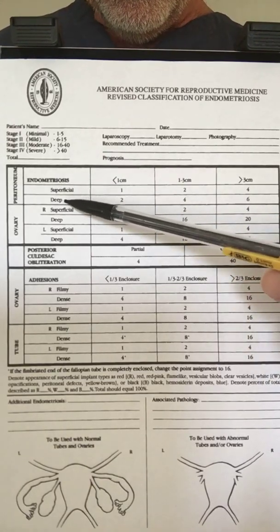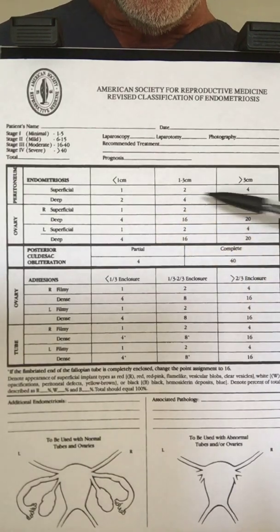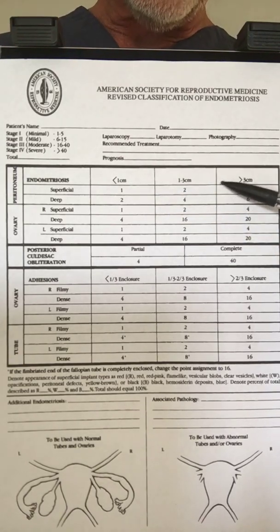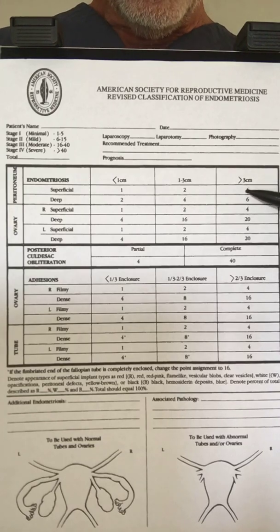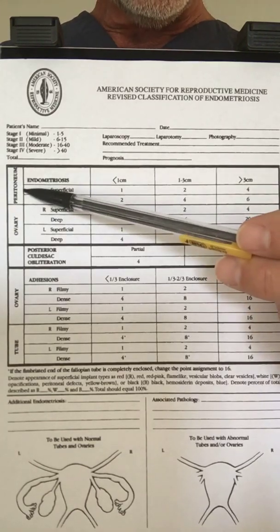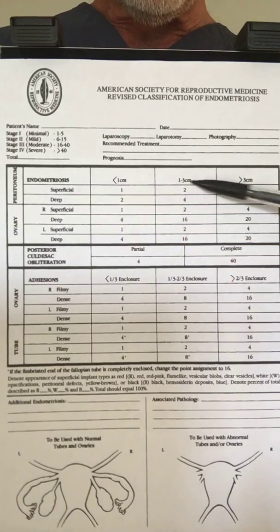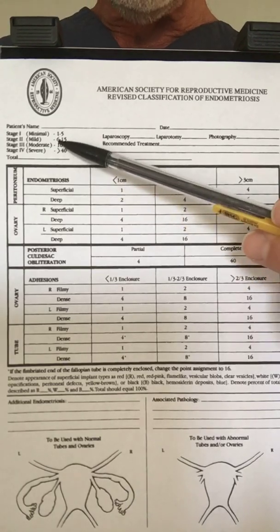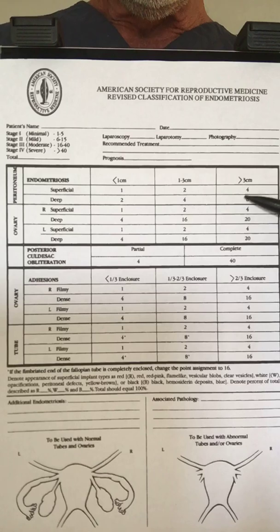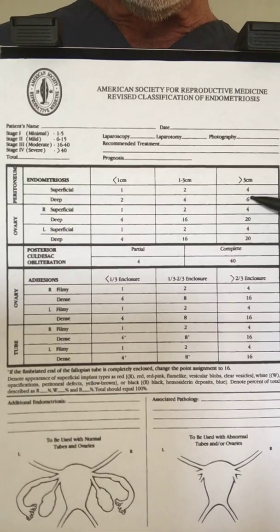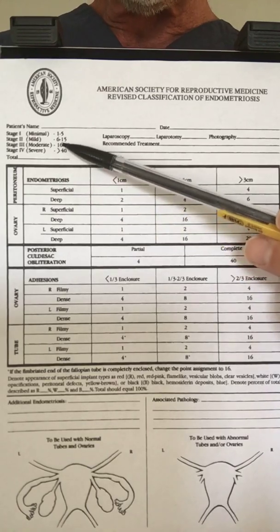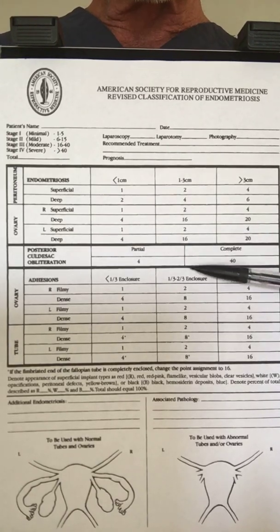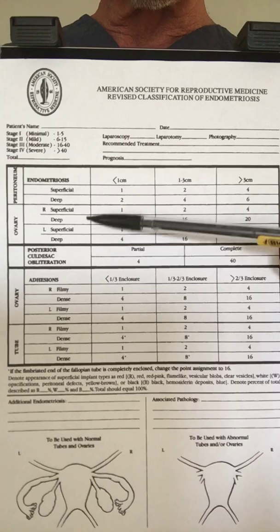Endometriosis on the peritoneum — the inside lining of the pelvis — can be superficial or deep. The columns represent less than one centimeter, one to three centimeters, and greater than three centimeters. If it's all over the peritoneum and just superficial, that's four points. If it's deep — going a little bit deeper than the surface of the peritoneum — that's six points, which barely gets you to stage 2. So if you don't have any scar tissue or endo in the ovaries, the most you can be is stage 1 or 2. And we all know stage 1 or 2 can be more painful than stage 3 or 4.